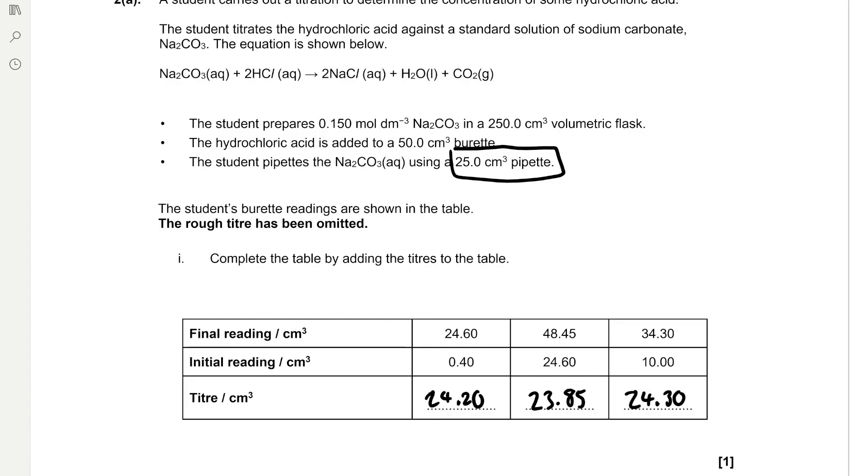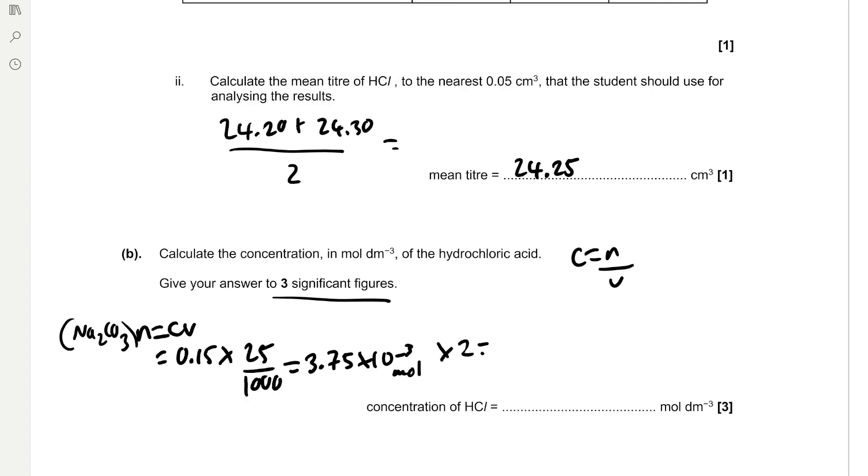If we look at the equation, the ratio of HCl to sodium carbonate is 2 to 1. So we multiply the moles of sodium carbonate by 2 to find the moles of HCl. 3.75 × 10⁻³ times 2 is 7.5 × 10⁻³ moles. To find the concentration we divide the moles, 7.5 × 10⁻³, by the volume which is the mean titre, 24.25 cm³ divided by 1000 to convert to dm³, which is 0.309 mol per dm³ to three significant figures.